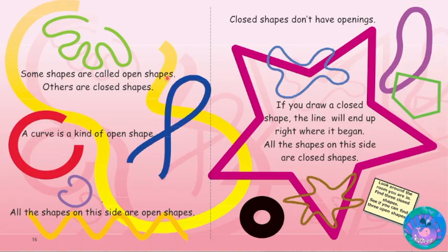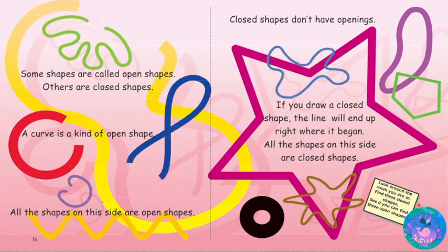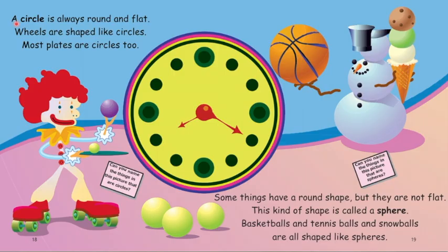Some shapes are called open shapes; others are closed shapes. A curve is a kind of open shape — all the shapes on this side are open shapes. Closed shapes don't have openings; if you draw a closed shape, the line will end up right where it began. All the shapes on this side are closed shapes. Look around the room you are in — find three closed shapes and see if you can find three open shapes.